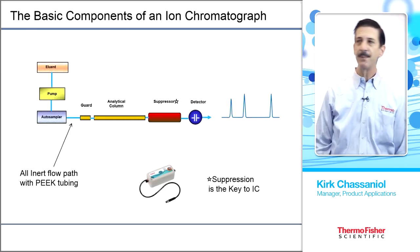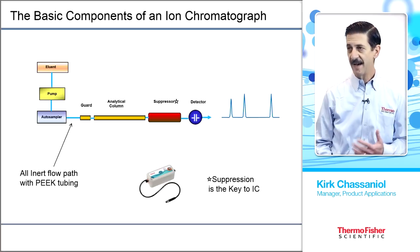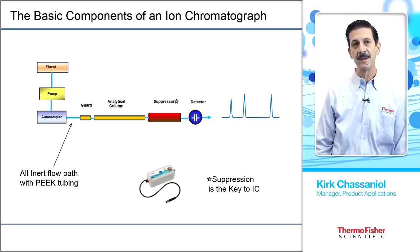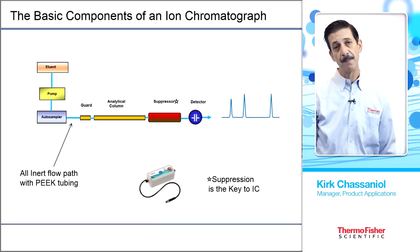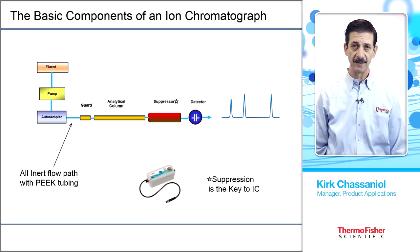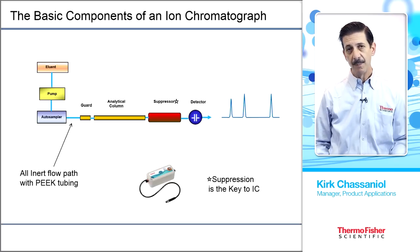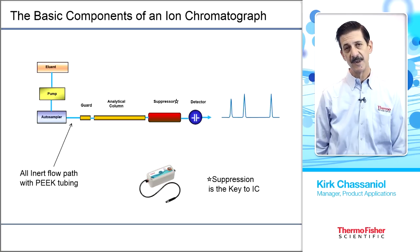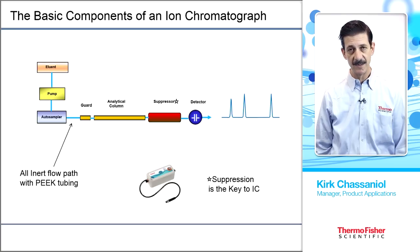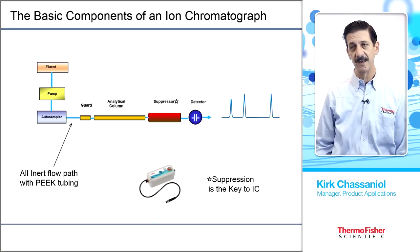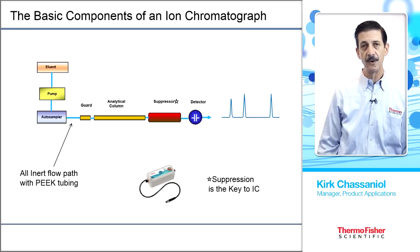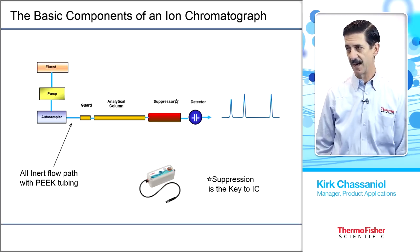The basic components of an ion chromatograph: we have a pump, an eluent or mobile phase, and some way to introduce the sample. The real value is the separation process, which occurs on the analytical column. A key component for any ion chromatography system is the suppressor. Since we're using conductivity as our detector, the suppressor is an integral part of the detection technique.